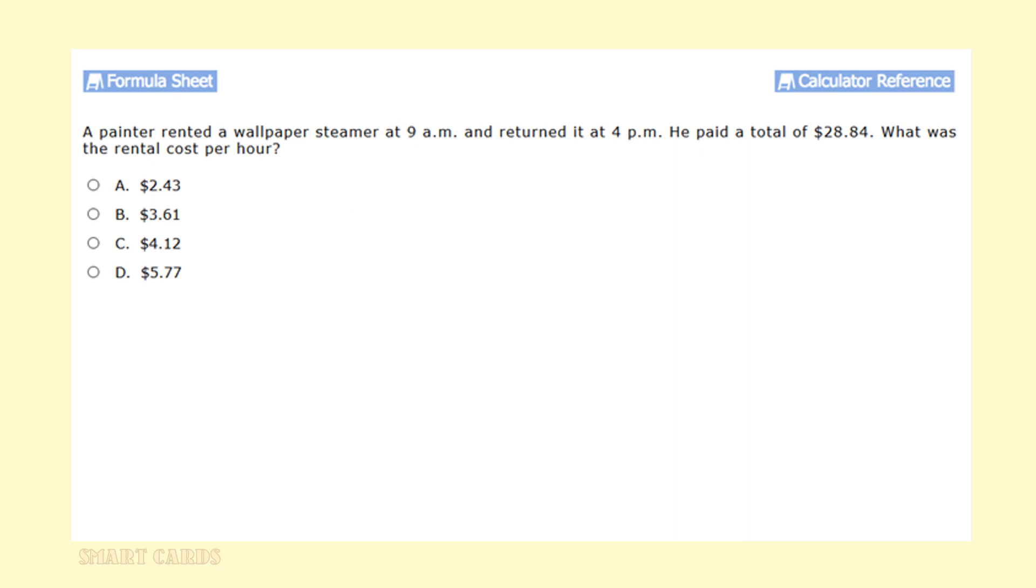Let's look at the signals in this problem. Signals in a math problem is everything that's important or information that we need to know to solve the problem, whereas everything else in the problem is considered noise and we can disregard that information. In this problem, there are two signals: the 9 a.m. to 4 p.m. rental time, which was seven hours, and the total pay, which was $28.84.